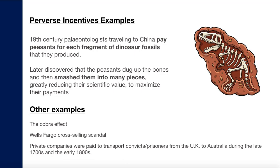Another example: in the 19th century, paleontologists traveling to China paid peasants for every fragment of dinosaur fossil collected. People dug up fossils, but when a fossil was large, they reasoned that breaking it into pieces would earn more payments per piece. So people started smashing fossils into smaller pieces — another perverse behavior. This not only cost the paleontologists more but also reduced the quality of fossils, diminishing their scientific value.